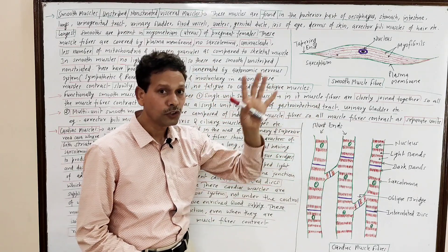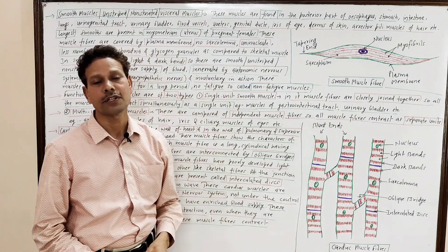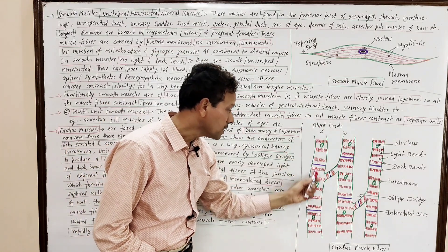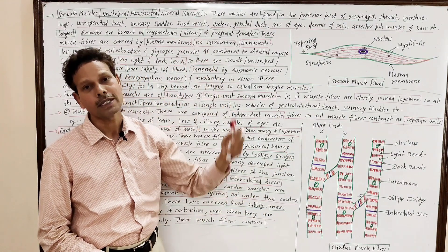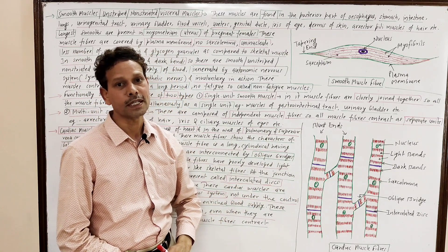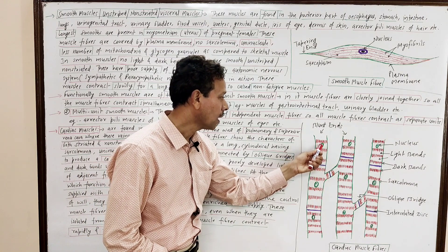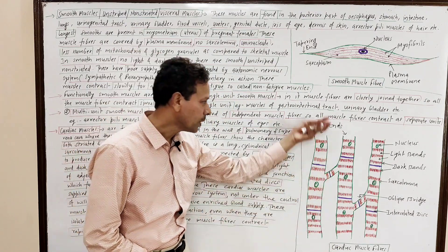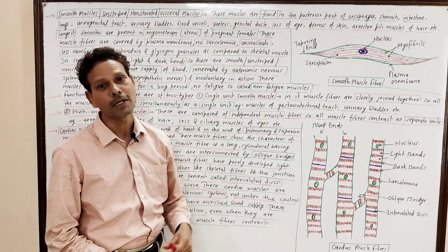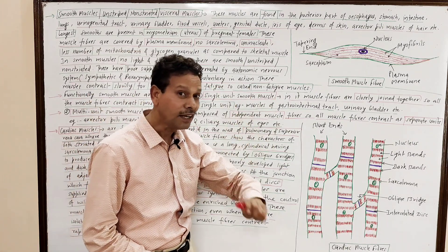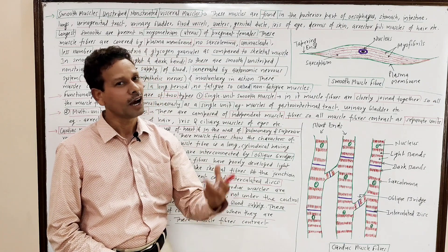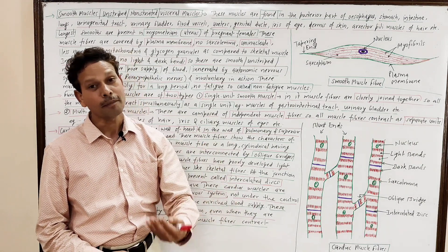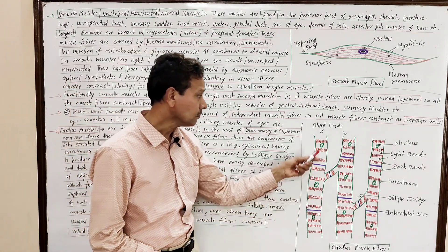Cardiac muscles are elongated, thread-like, cylindrical structures, while smooth muscles are spindle shaped. On the basis of structure, cardiac muscles resemble skeletal muscles — they possess alternately arranged dark and light bands, meaning these are striated muscles. However, note that in skeletal muscles these light and dark bands are well developed, but in cardiac muscles the light and dark bands are poorly developed.